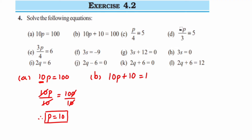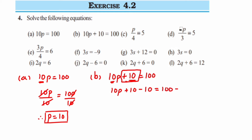The second problem: 10p + 10 = 100. We cannot remove the 10 in multiplication immediately — doing so would make it more complicated. Instead, we first remove the constant 10, which is under addition. So we subtract 10 on both sides: 10p + 10 - 10 = 100 - 10. Plus 10 minus 10 becomes 0, so we get 10p = 90.